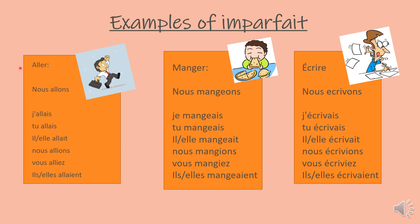Examples of imparfait. The first one is aller. With aller, the nous form is nous allons, and in this case the stem is all- after removing the -ons ending. Then we simply add the endings of imparfait as seen in the previous slide: j'allais, tu allais, il ou elle allait, nous allions, vous alliez, ils ou elles allaient.